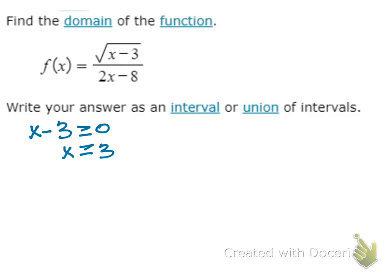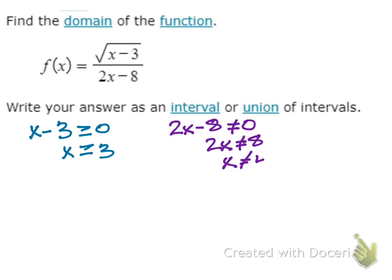Next, let's deal with the denominator. 2x minus 8 cannot be 0, so 2x cannot be 8, meaning x cannot be 4.